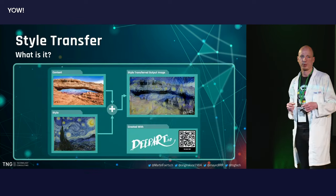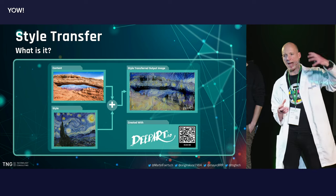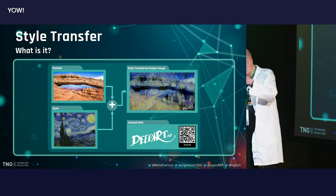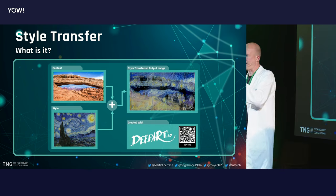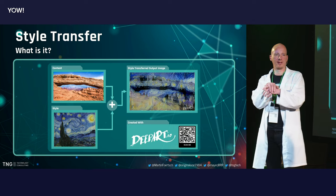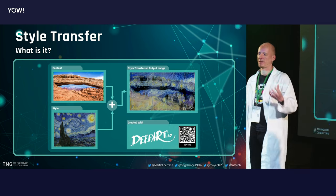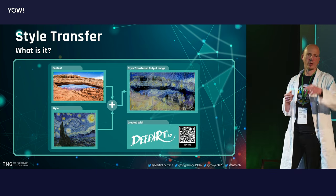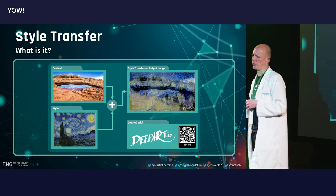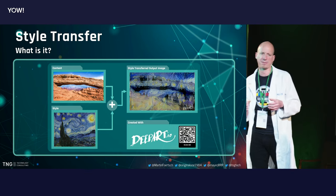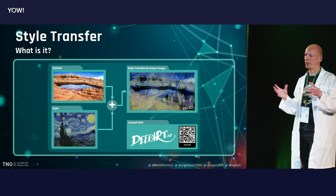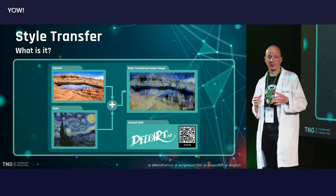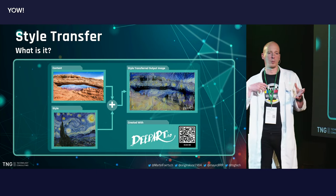In the next slide we can see what it actually means. We have a photo and a painting. We extract the style of the painting, apply it to our input photo, and we have a kind of pastiche. The inventor of this has the website deepart.io. You probably know it from other apps like Prisma. At TNG, we worked on this and made it real time.